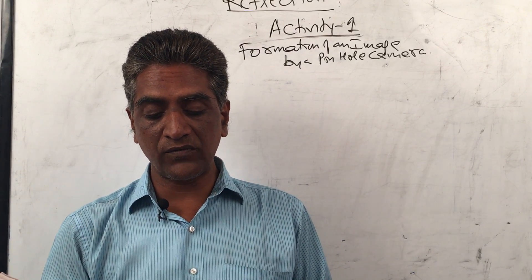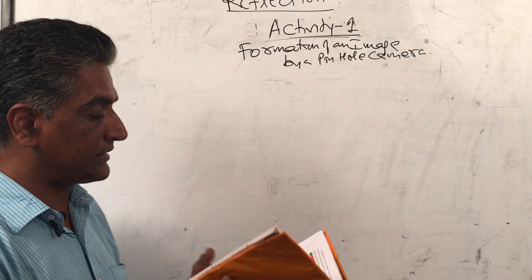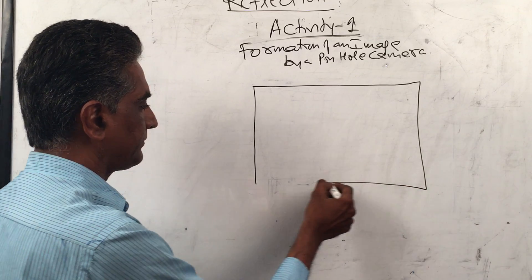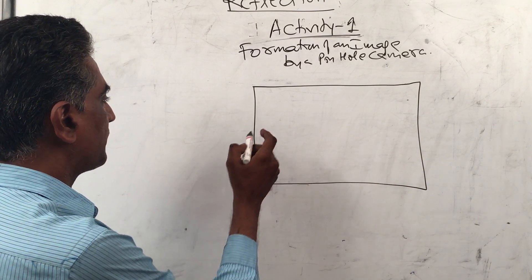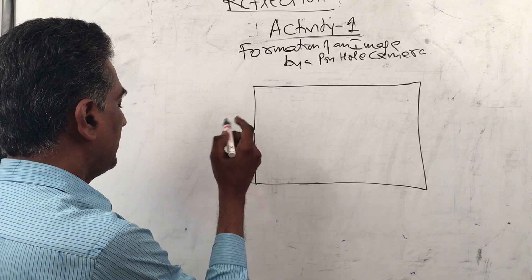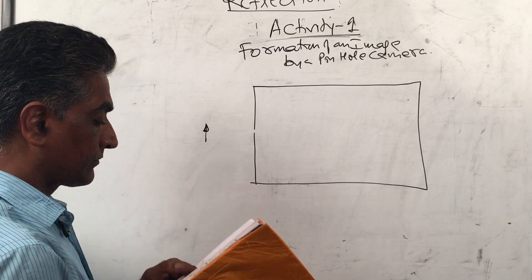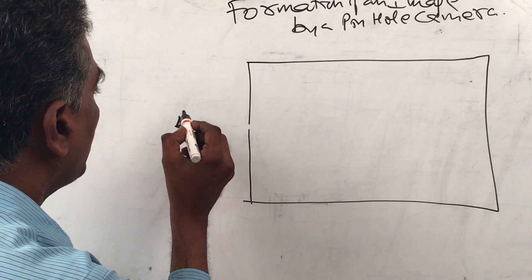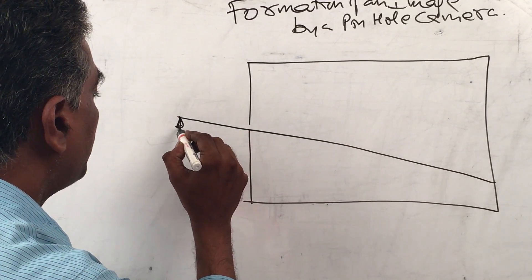What would happen if we increase the size of the hole of the pinhole camera? Observe the frame. So first, let's see the pinhole camera. It goes like this and you have a small, we make a small hole here. So you have a small candle here and this is one part. It goes in, forms there.